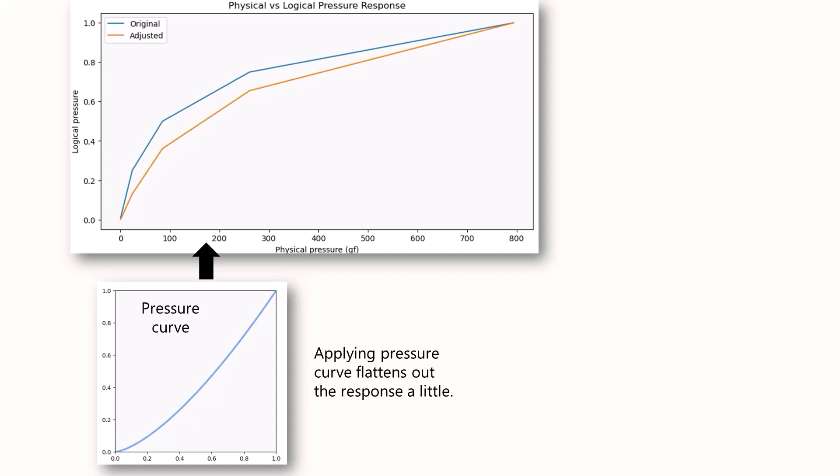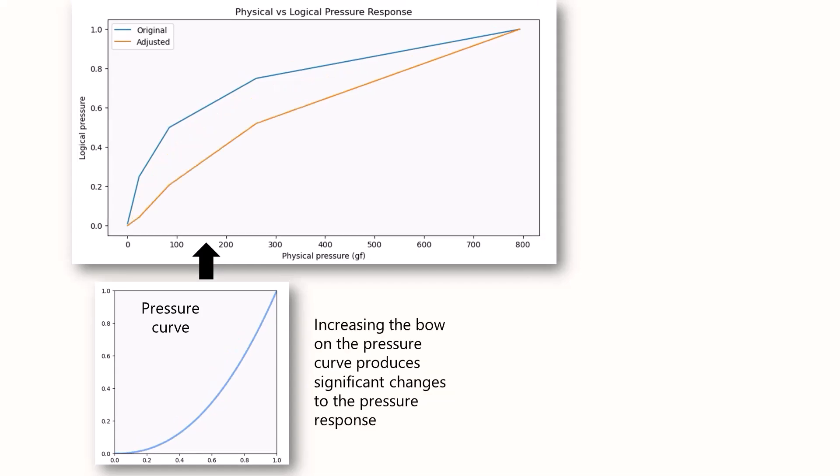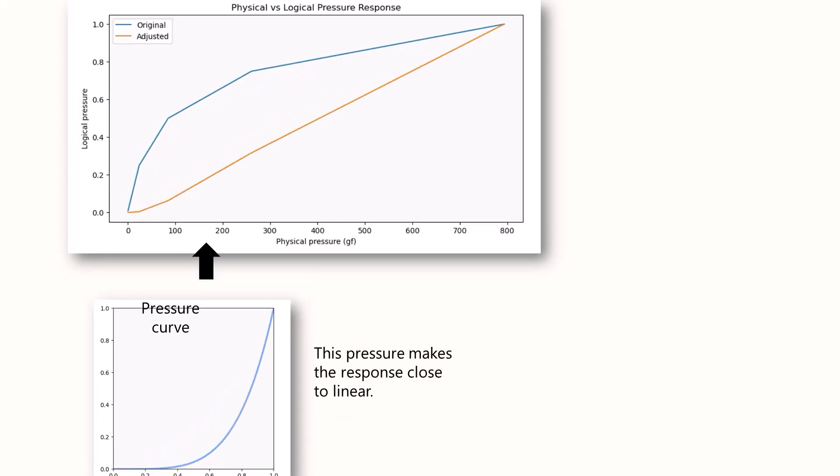You can see the orange line is a bit flattened out now. And if we change the pressure curve to be a little more extreme, there's even more flattening. And if we go to a really extreme pressure curve, we can make the response almost linear.